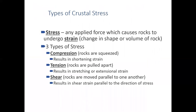Types of crustal stress: stress is any applied force that causes rocks to undergo strain, and strain is any change in the shape or volume of the rock. Compression, occurring at convergent plate boundaries, results in shortening strain — the length of the rocks shortens, like pressing an accordion together.